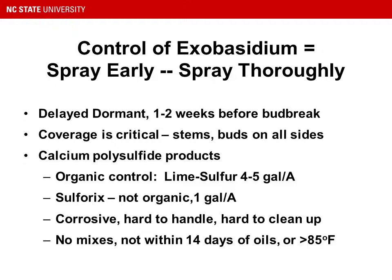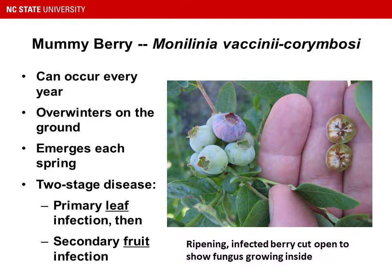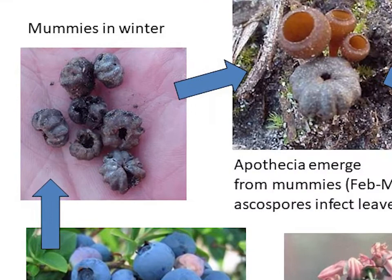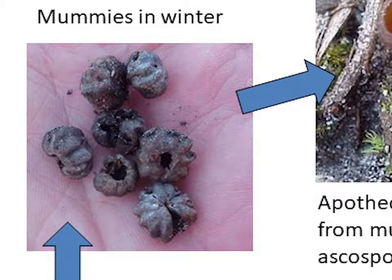Another fungal disease that relies heavily on fungicides for control is mummyberry. This fungus can occur every year — it overwinters on the ground and emerges each spring from the old infected fruit. It's a two-stage disease: you have a primary leaf infection followed by a secondary fruit infection. The image here shows an infected berry; if you cut them open, you can actually see the fungus growing inside the berry even before it starts to turn color. If we look at the disease cycle of mummyberry, we'll start at the upper left with the mummies in wintertime. This is the sclerotia left after the rest of the berry has sloughed off, and what you wind up with is a little pumpkin-like hollow structure of fungal tissue that overwinters and is quite hard.